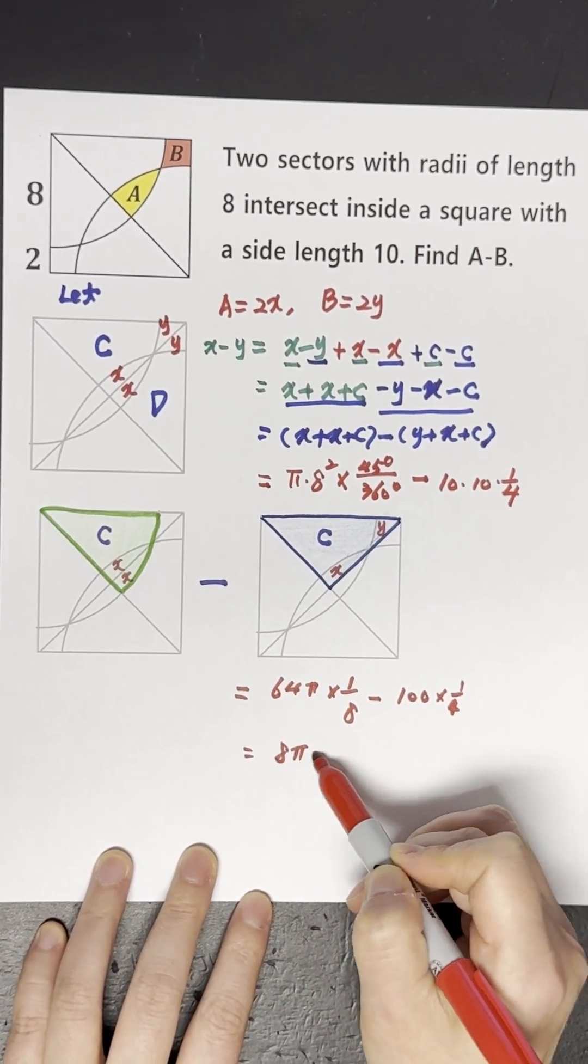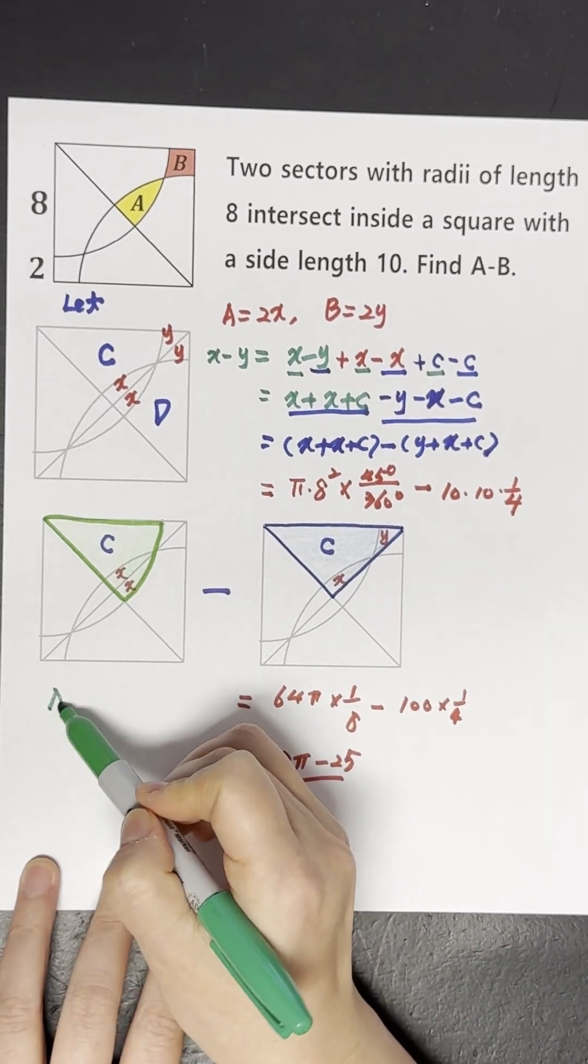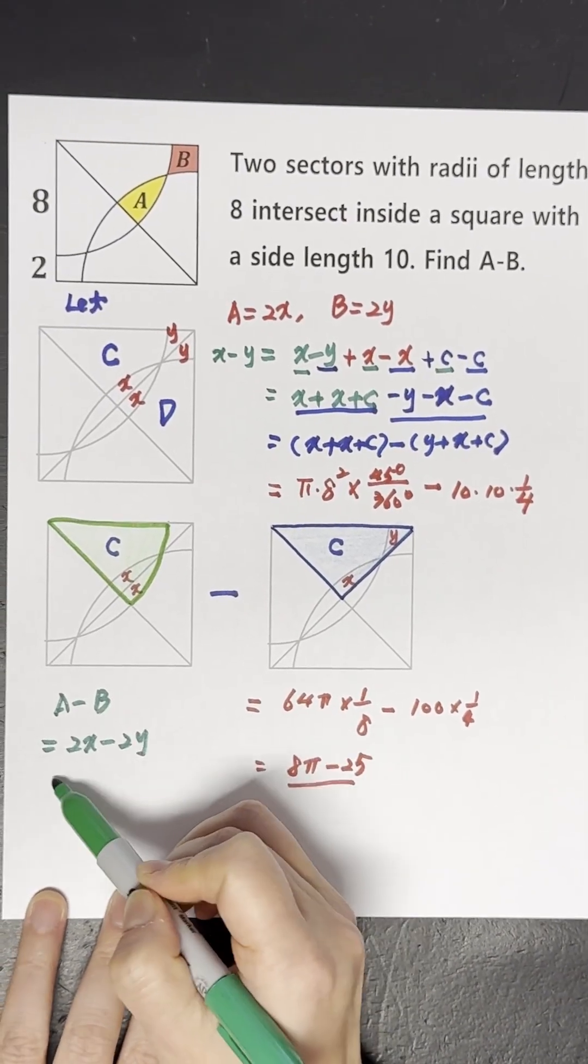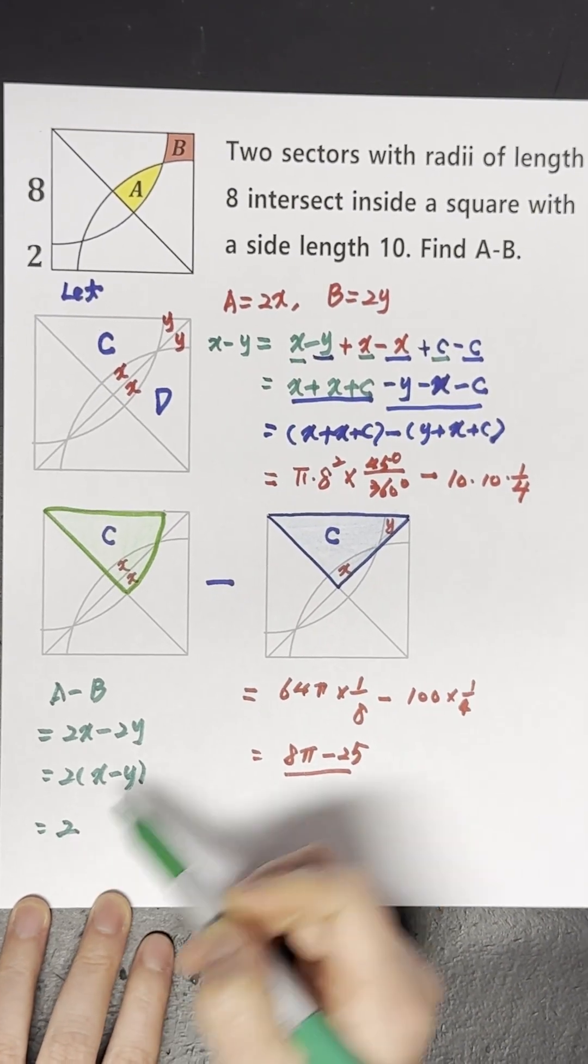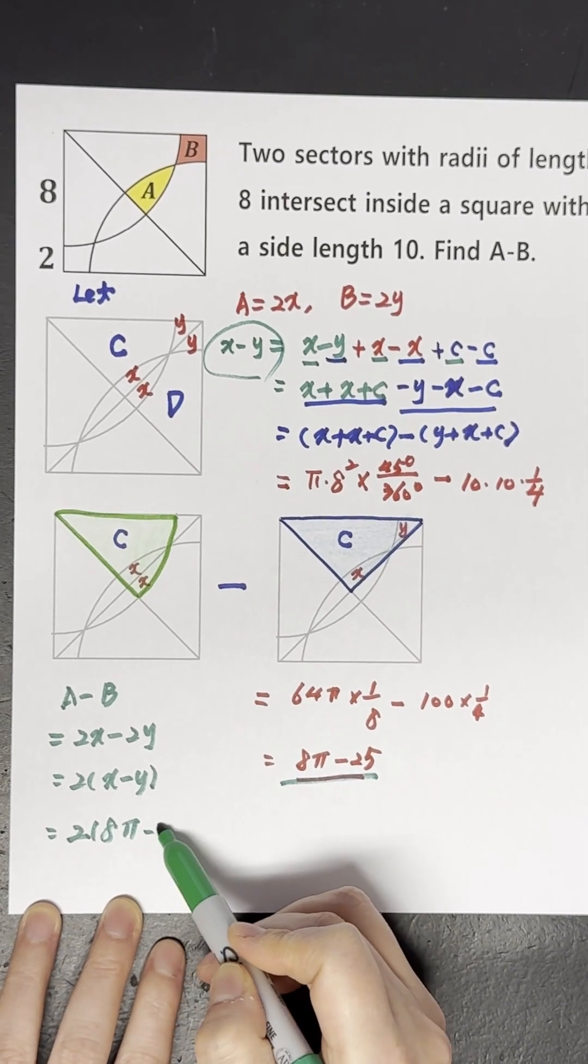And this answer is 8π minus 25. However, we're looking for A minus B. The final answer is 16π minus 50.